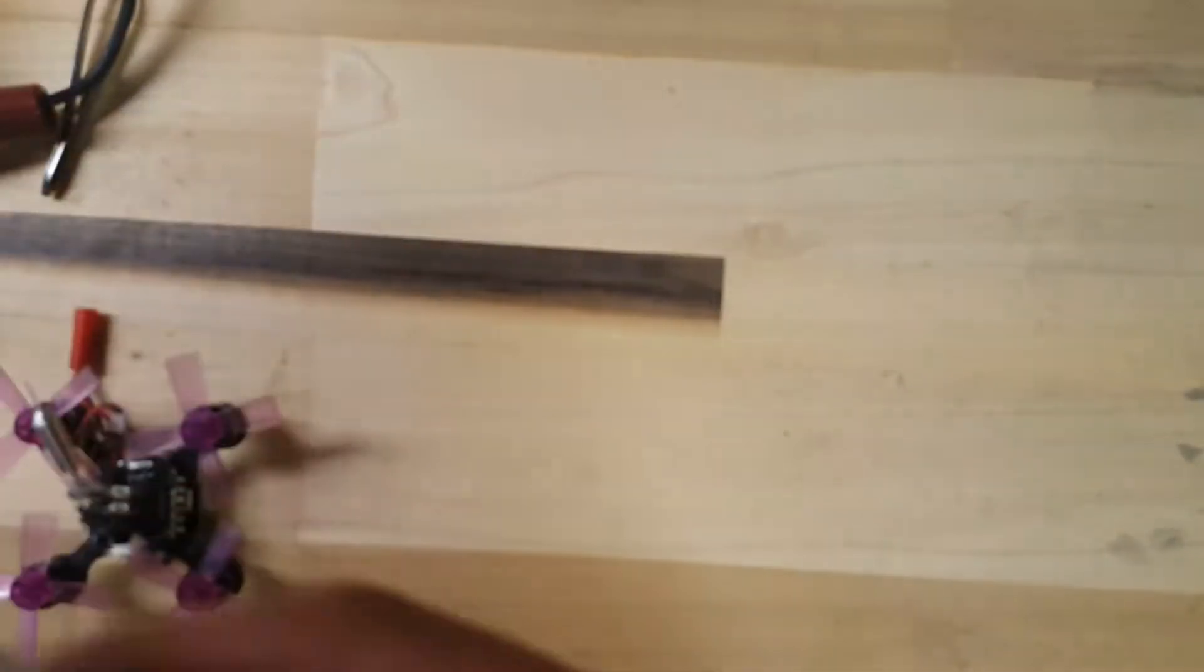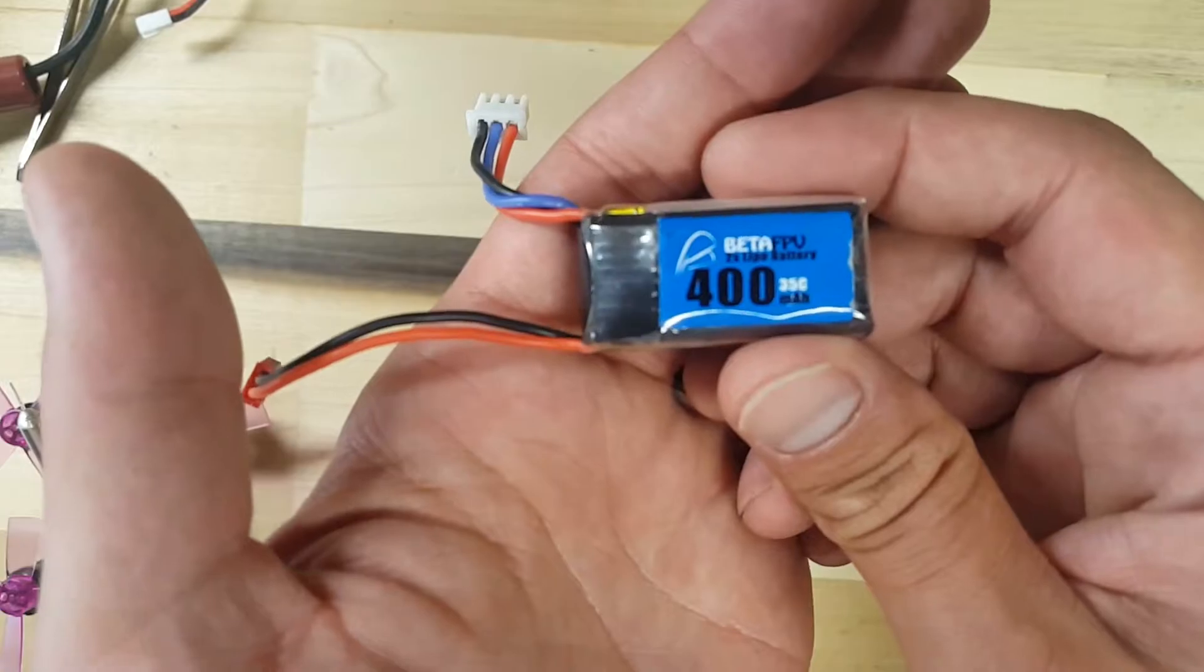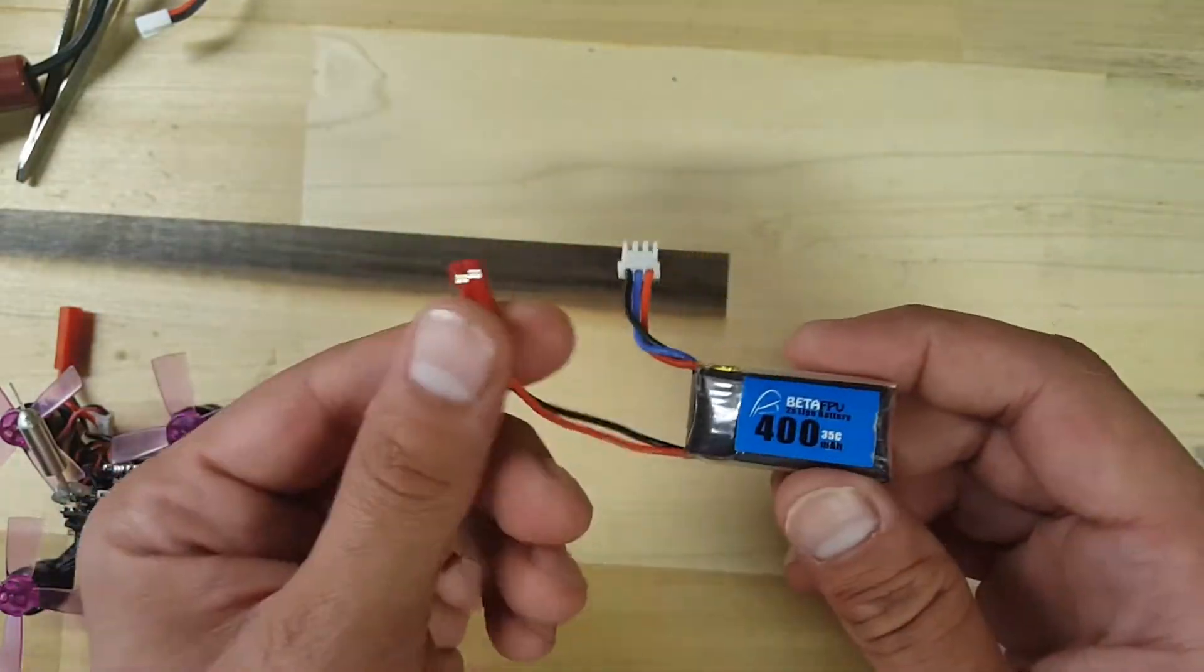Along with that you get a 400mAh 2S LiPo battery. This is rated at 35C. You've got a balance port and a GST connector.